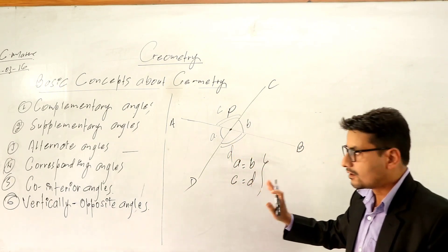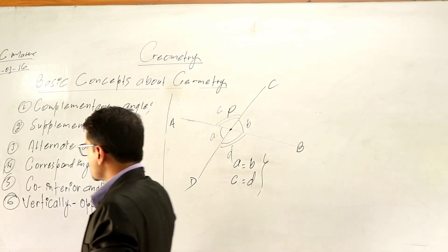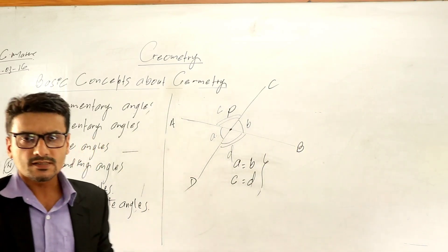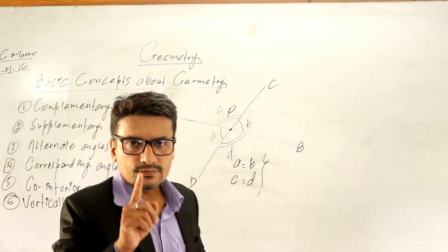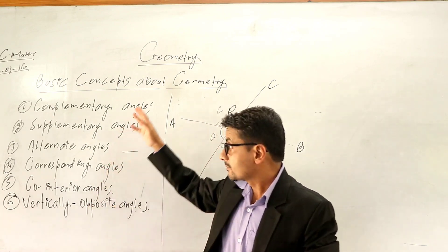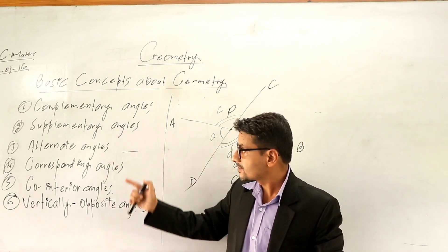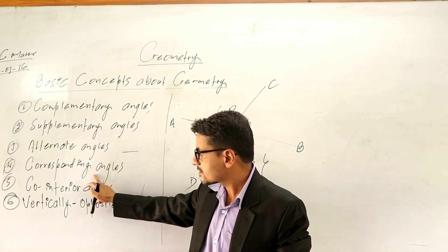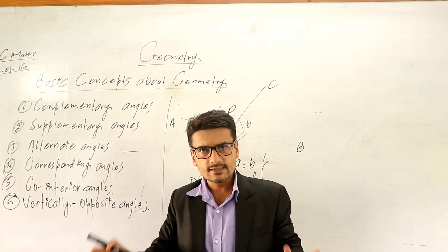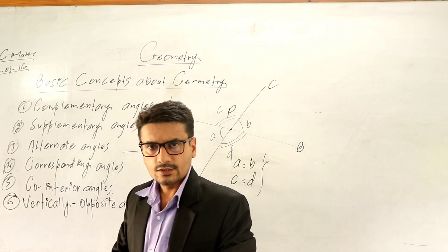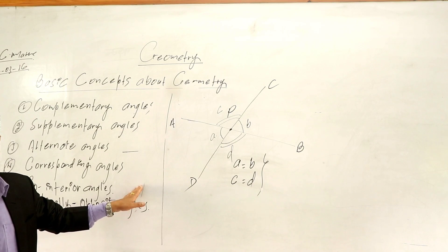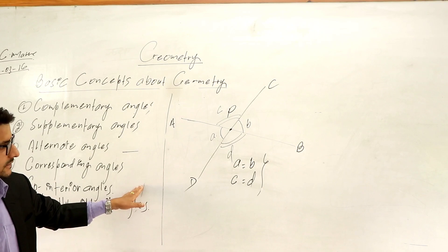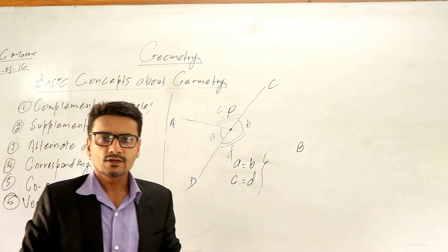Today we discussed the basic concepts of geometry: triangles and their types on the basis of sides and angles, and some angles — complementary, supplementary, alternate, corresponding, co-interior, and vertically opposite angles. You revise all of these and try to understand by yourself also, and then we will discuss more in the next class. Thank you class, bye bye.